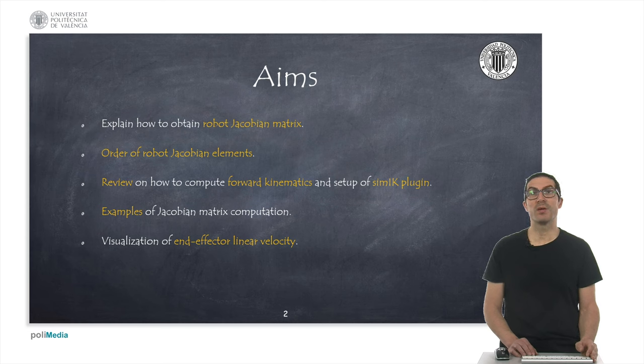The aims of the video are to explain how the robot Jacobian matrix can be obtained using the CMIK plugin, and I will explain how we should reorder the elements of the matrix in order to obtain the expected results, based on the conventional definition of the Jacobian matrix. In order to get proper calculations, we need also to know the orientation of the end effector, and for that reason, I'm going to quickly review how to obtain forward kinematics, and also how to set up all the elements that the plugin requires in order to compute the Jacobian.